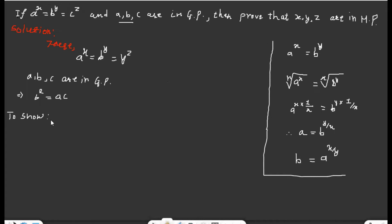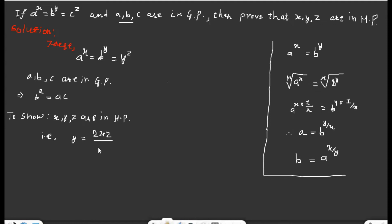We need to show that x, y, z are in harmonic progression. Harmonic progression means one over x, one over y, one over z are in arithmetic progression. According to the harmonic mean condition, if they are in harmonic progression, then y equals 2xz over x plus z. If we are able to show this relation, then obviously x, y, z are in harmonic progression.